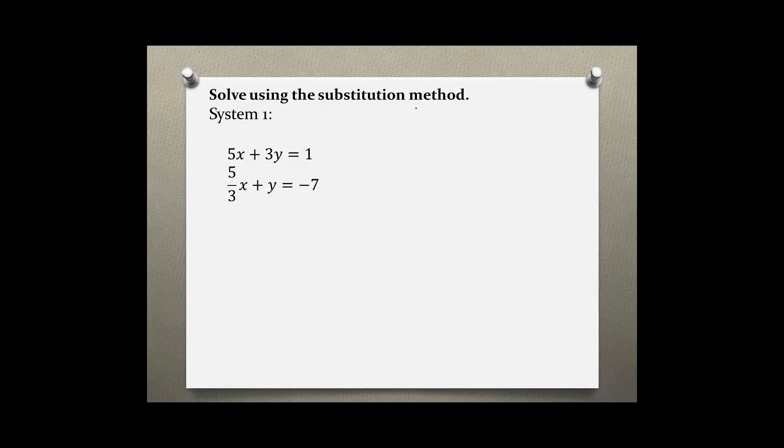Solve using the substitution method. System 1: 5x plus 3y equals 1, and 5 over 3x plus y equals negative 7.